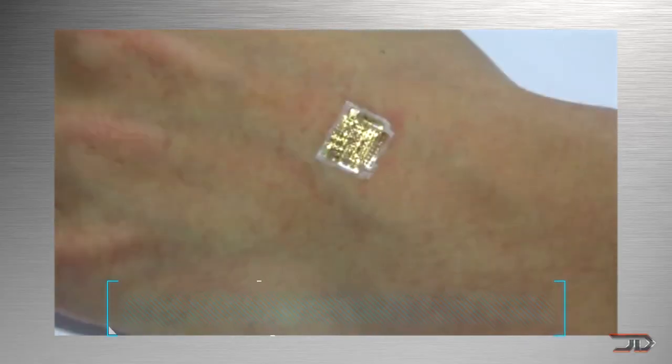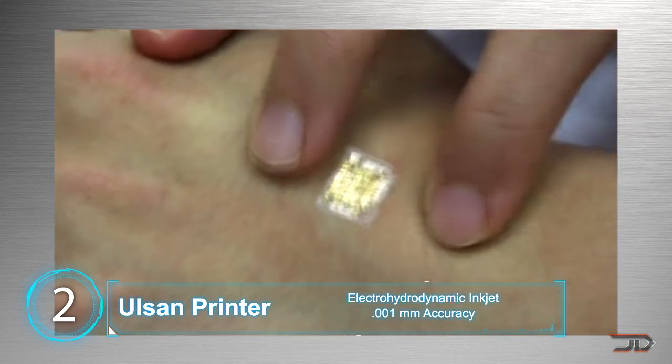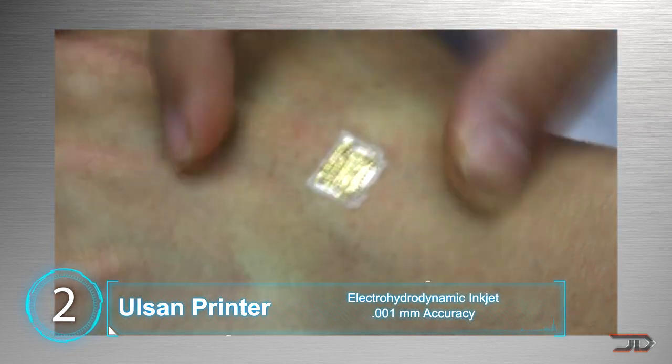At number 2, the Allsand Microscopic Printer. This breakthrough device can print layers smaller than human red blood cells at 0.001 millimeters.